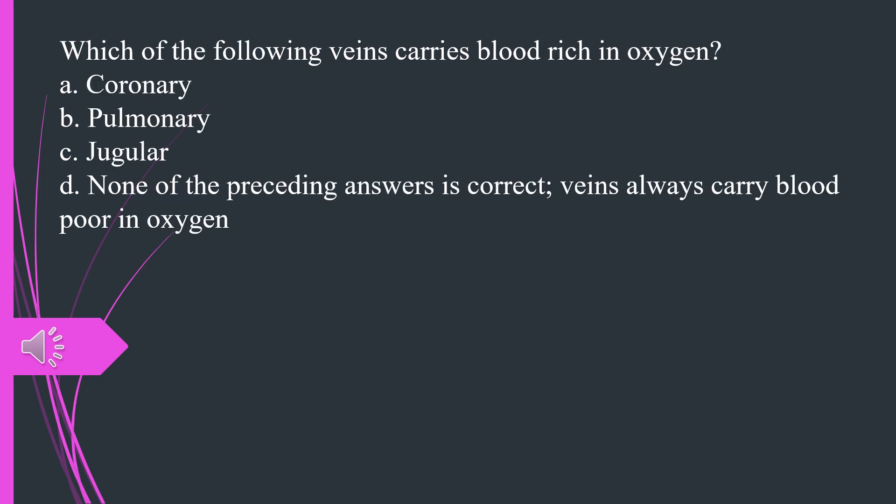Which of the following veins carries blood rich in oxygen. A. Coronary B. Pulmonary C. Jugular D. None of the preceding answers is correct, veins always carry blood poor in oxygen. The answer is B, pulmonary.